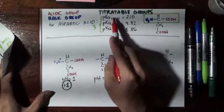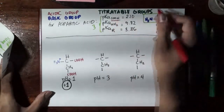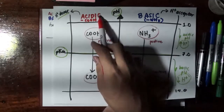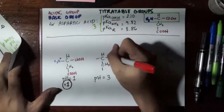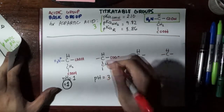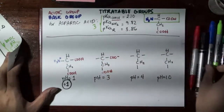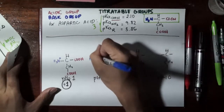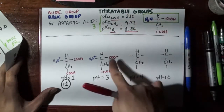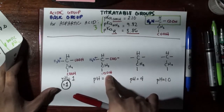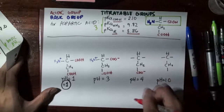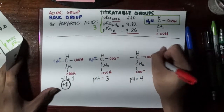At pH 3, we have already exceeded the pKa of the COOH of the constant part, so that carboxyl group becomes negatively charged. The other two groups remain the same. At pH 4, we have now exceeded the pKa of the R group, and since it is also an acidic functional group, it also becomes negatively charged. The other two groups are copied over as unaffected.